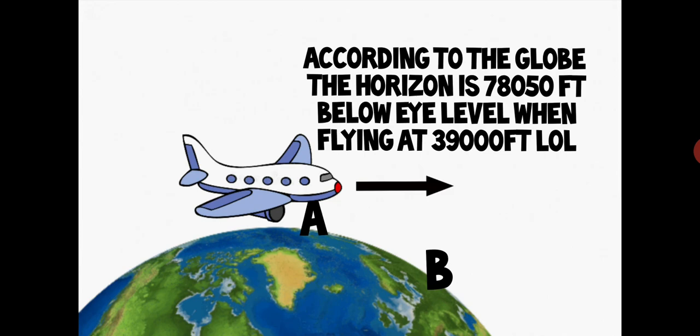According to the globe maths, that horizon is not only 39,050 feet below eye level, you've also got to add the 39,000 feet of altitude that you're in your plane. So it works out, when we test the globe mathematics, the horizon that appears at eye level, however high we go, but in this instance in the plane at 39,000 feet, according to the globe maths, that horizon should be 78,050 feet below eye level.